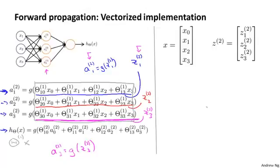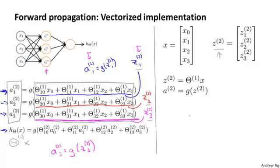And let's define z2 to be the vector of the z values of z21, z22, z23. Notice that z2, this is a three-dimensional vector. We can now vectorize the computation of a21, a22, a23 as follows. We can just write this in two steps. We can compute z2 as theta1 times x, and that would give us this vector z2. And then a2 is g of z2. And just to be clear, z2 here, this is a three-dimensional vector, and a2 is also a three-dimensional vector. And thus this activation g, this applies the sigmoid function element-wise to each of z2's elements.